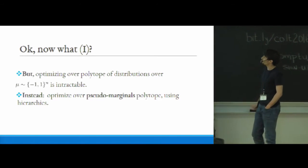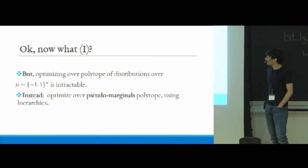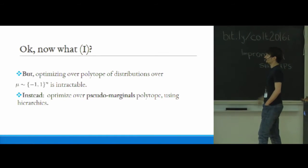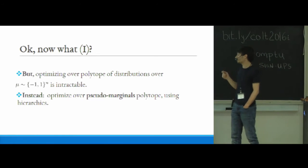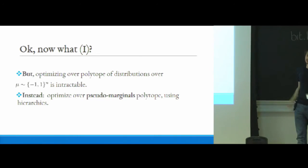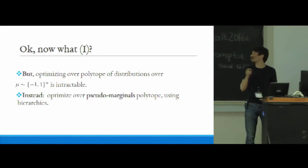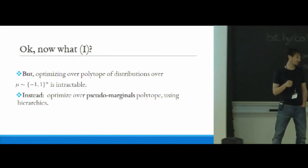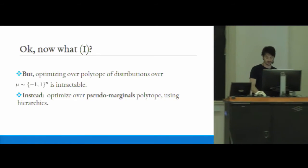So what did we do? So basically we reduced calculating the partition function to some sort of optimization problem, but unfortunately we need to optimize over this polytope of distributions over the hypercube which is intractable on its own. So now what we do is we instead will optimize over a polytope of pseudo-marginals and I'll explain what that is, and this is done using a convex programming hierarchy. So this was the second ingredient if you recall.